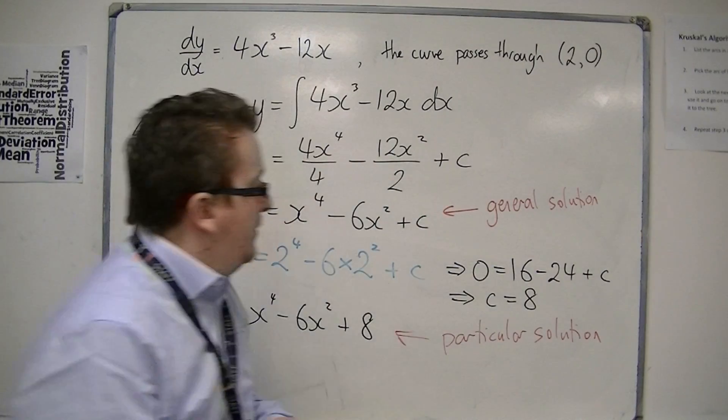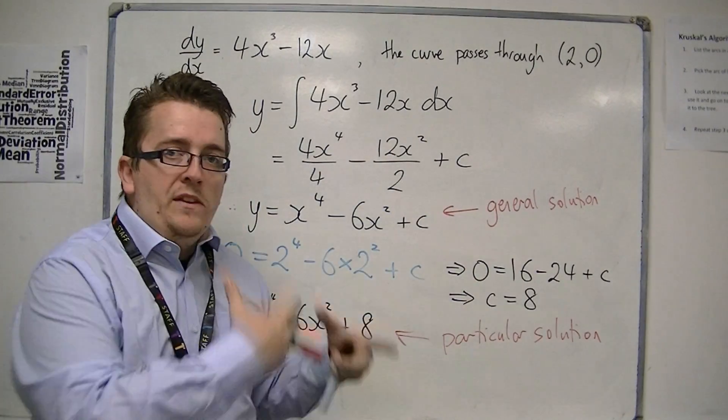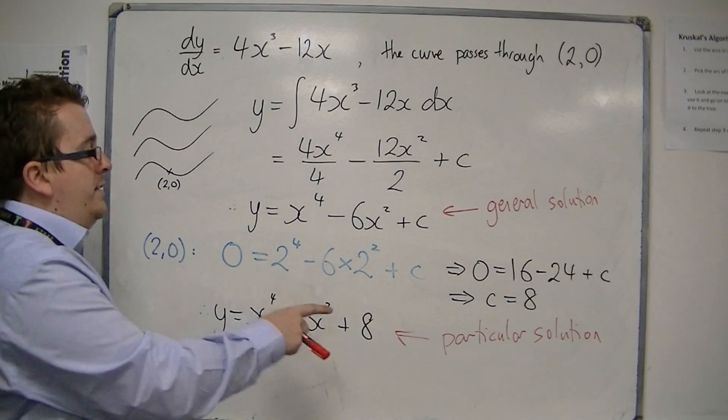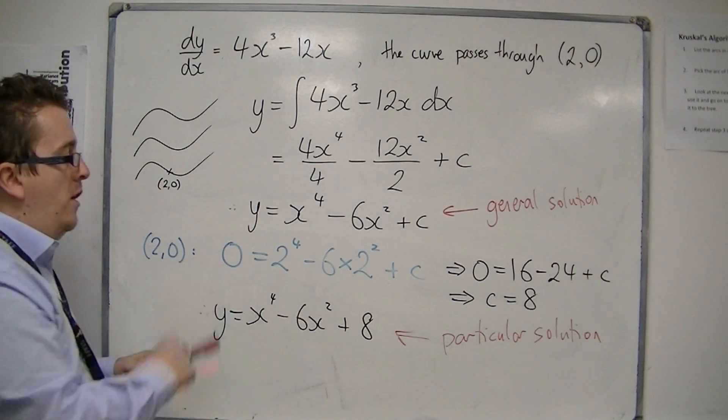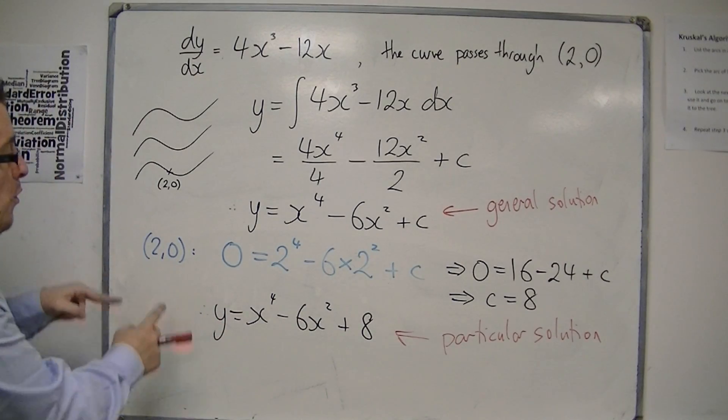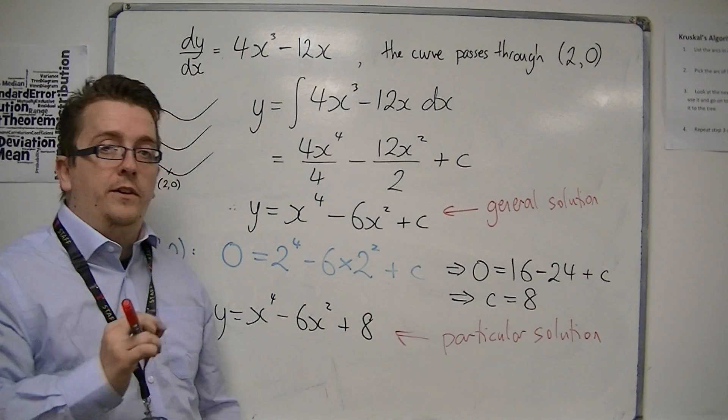Now, you don't need to particularly know these key names for them. But you do need to know this process of how we can work out the value of c by substituting in a coordinate that we know that the curve passes through.